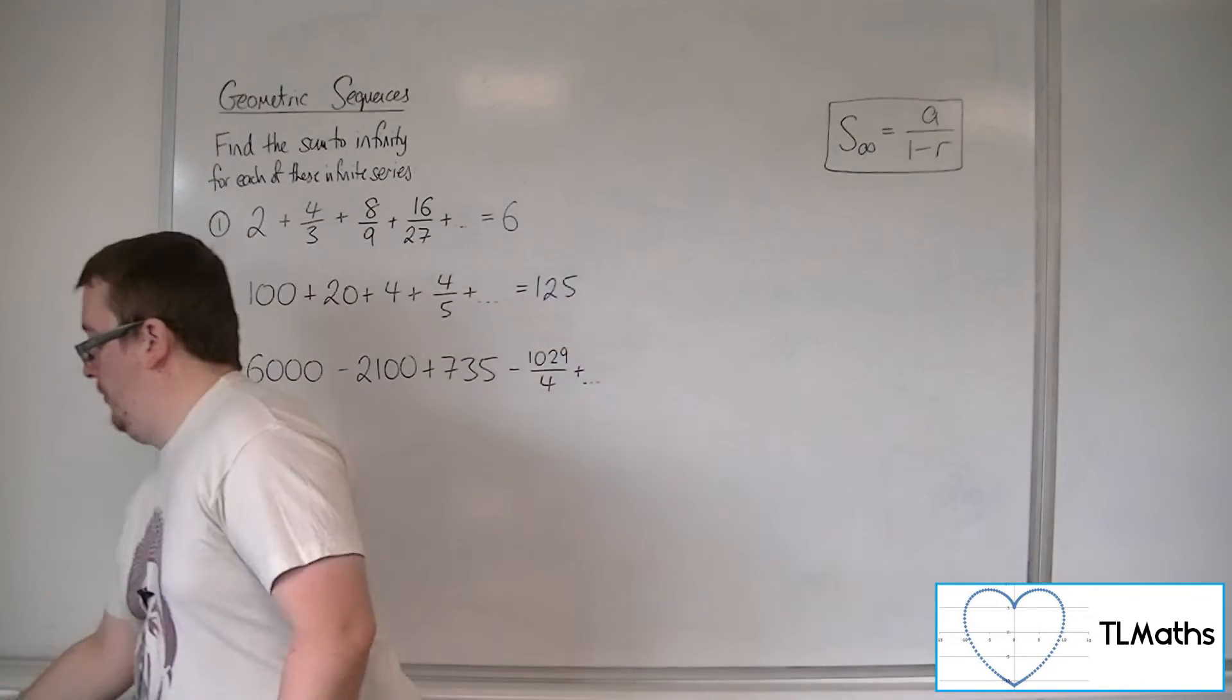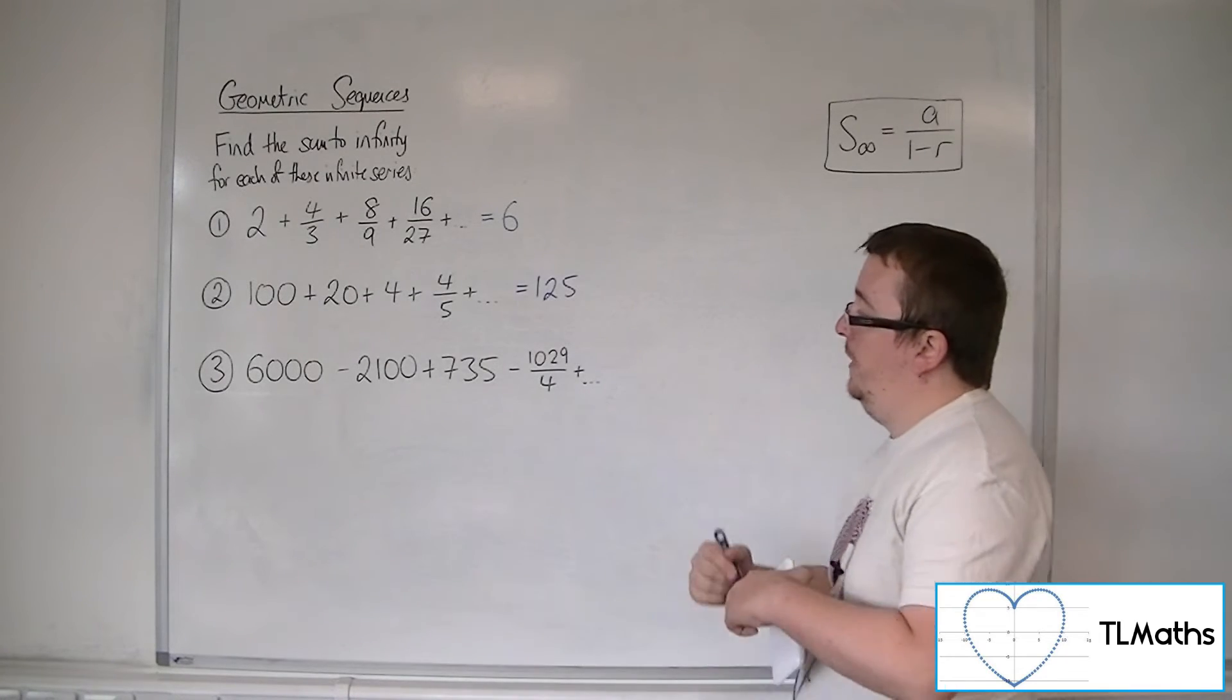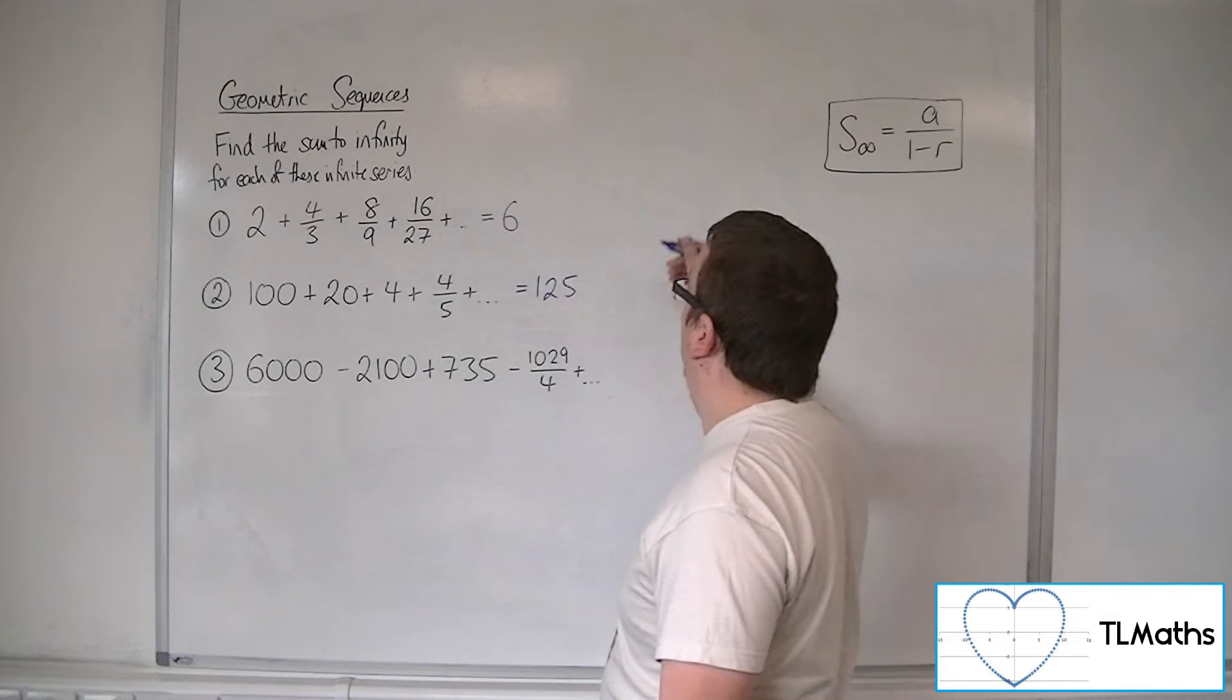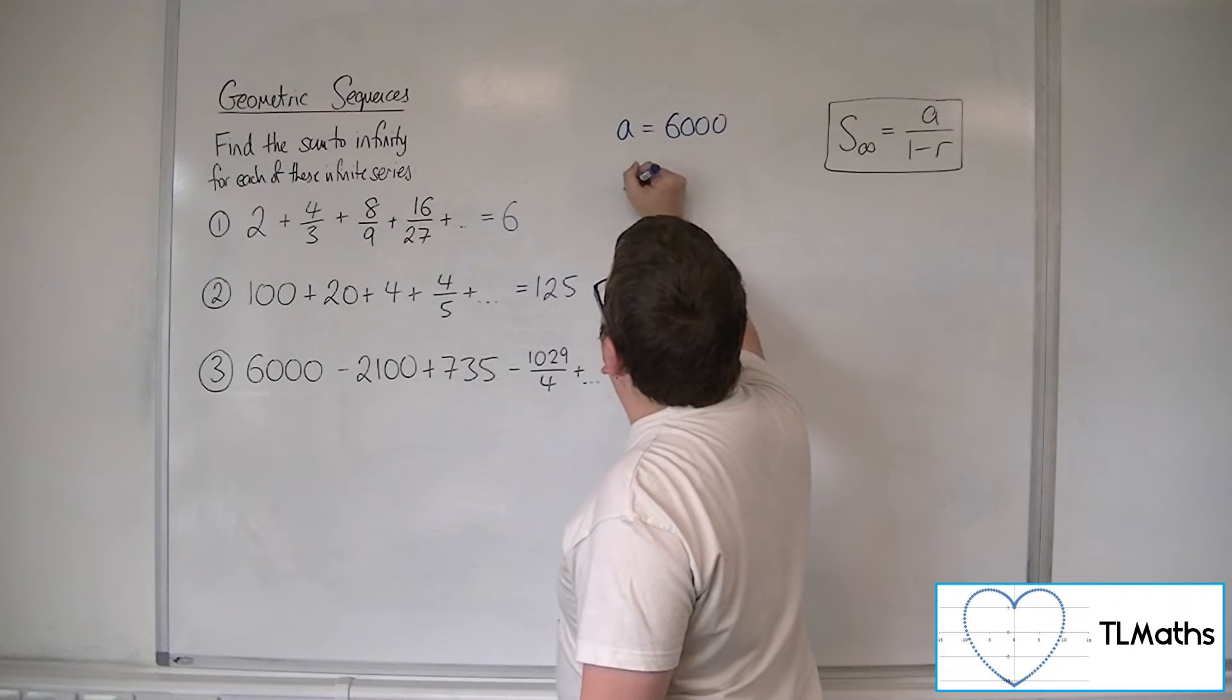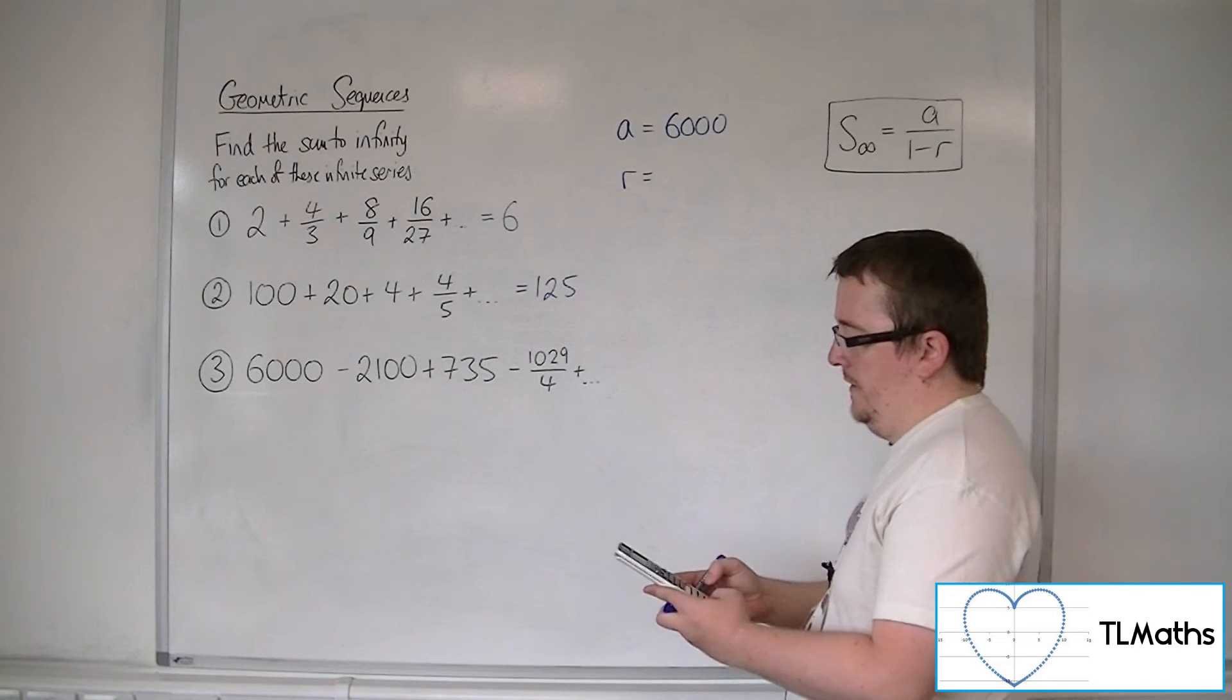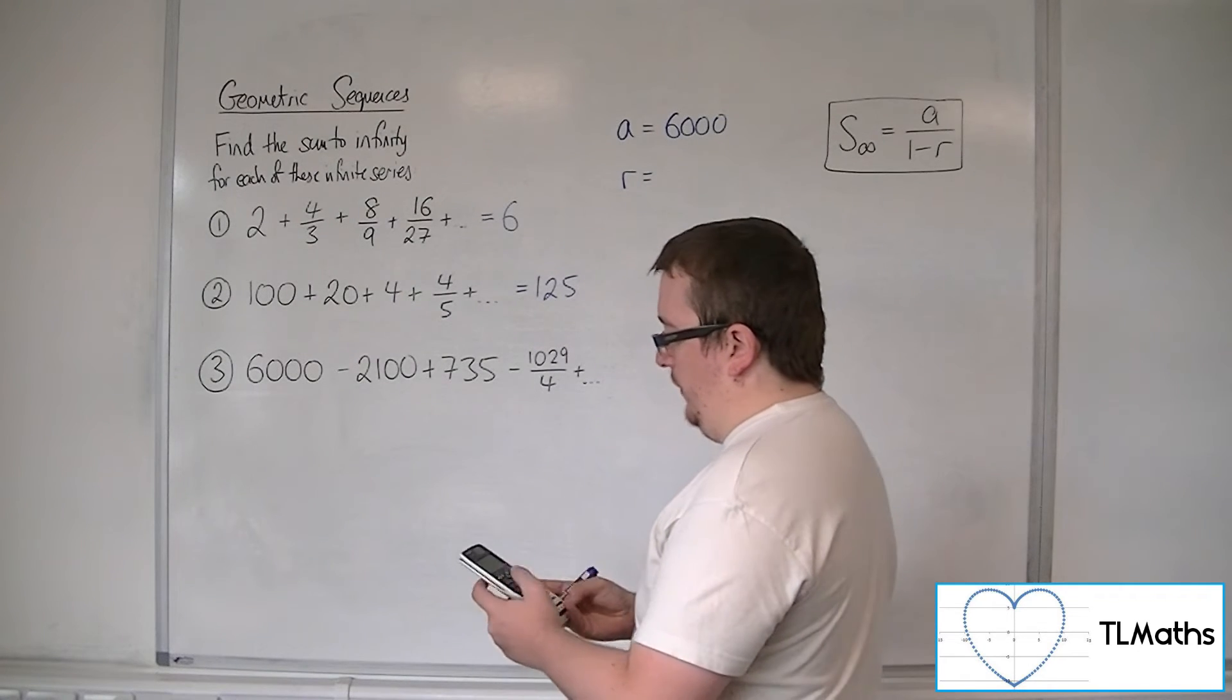And then finally, number 3, we have 6,000 take away 2,100 plus 735 take away 1,029 over 4 plus etc. So the first term is 6,000. The common ratio minus, so don't forget the fact that we've got a negative there, minus 2,100 divided by 6,000, which is minus 7 twentieths.